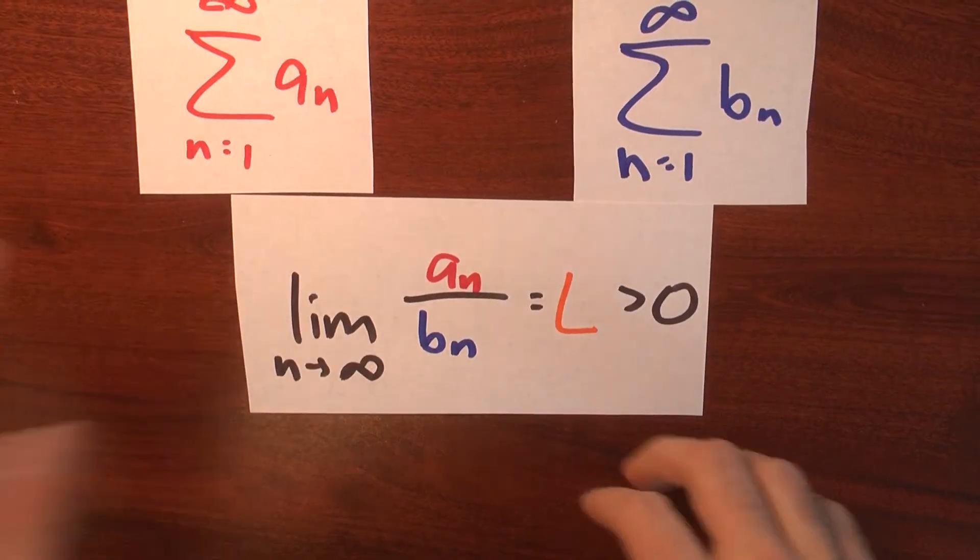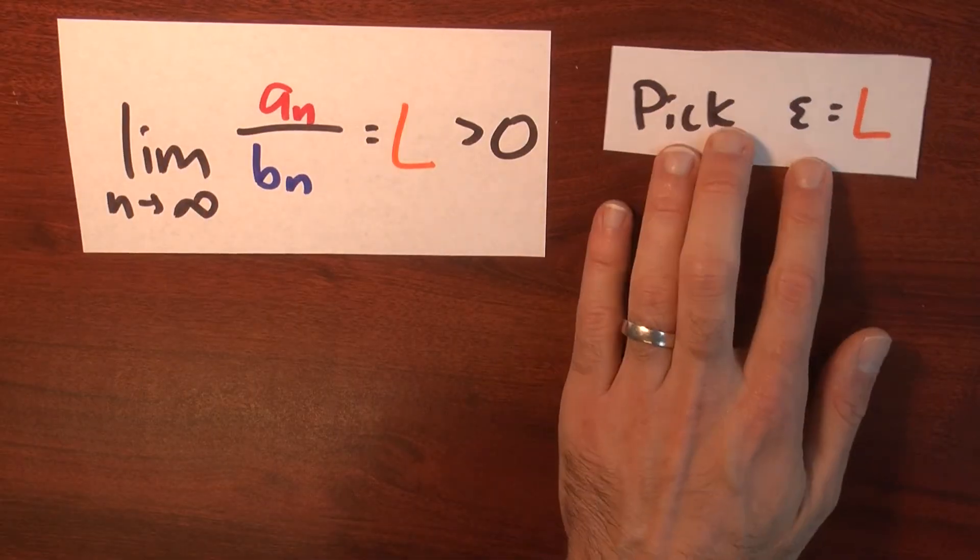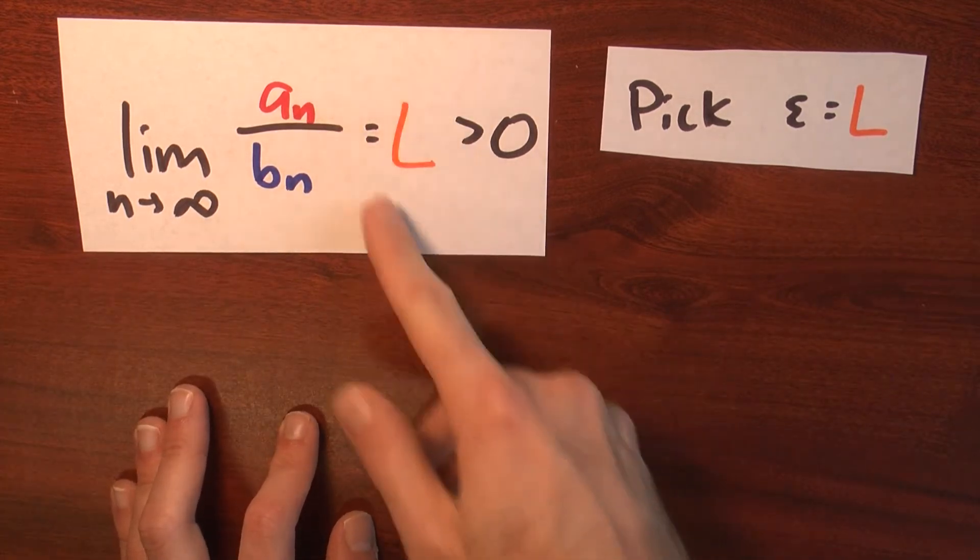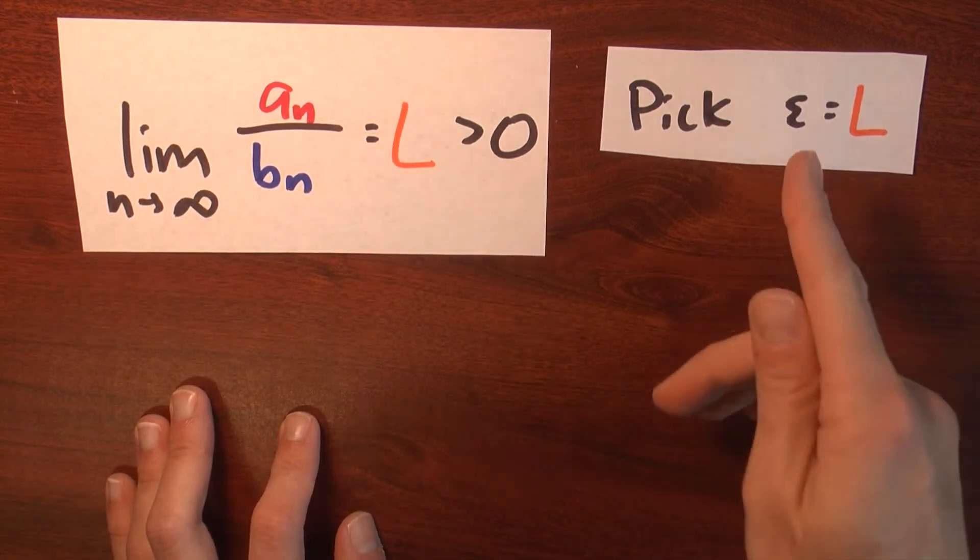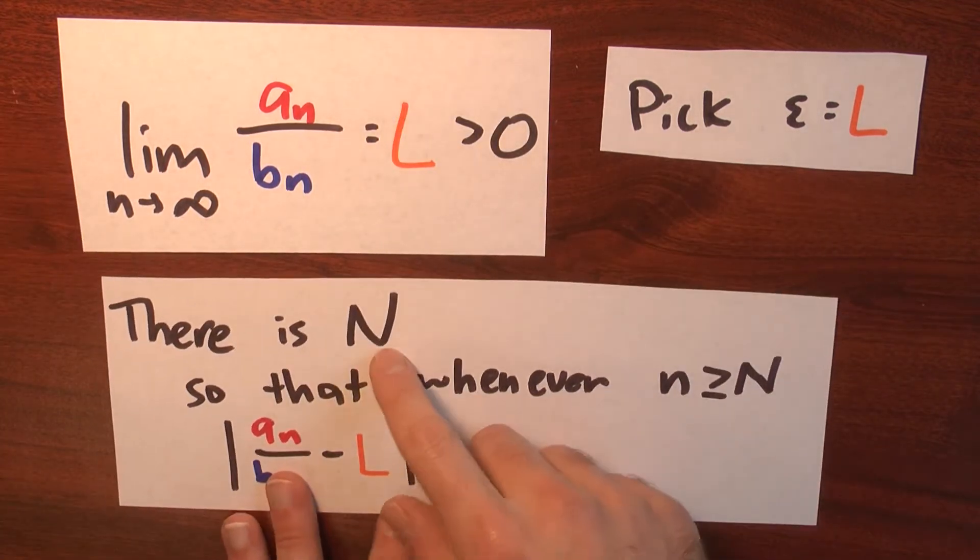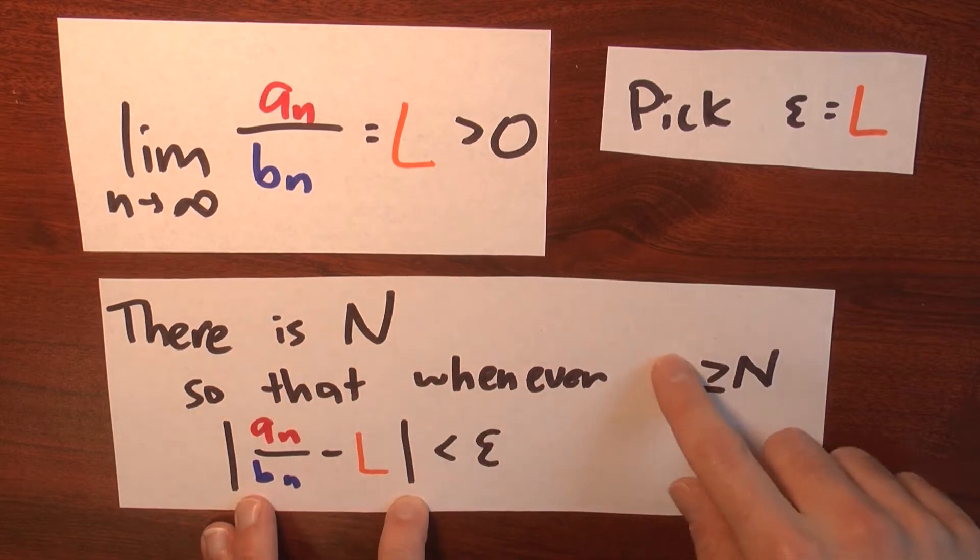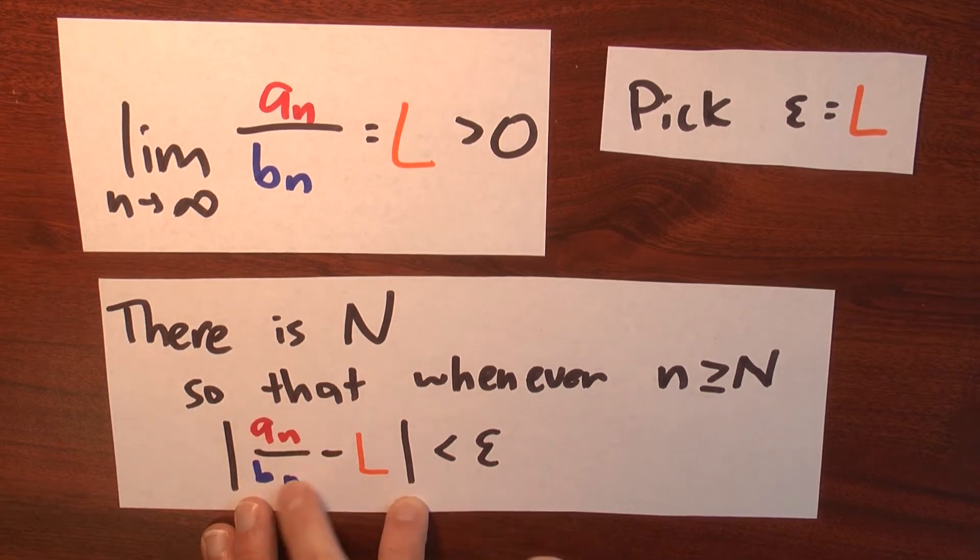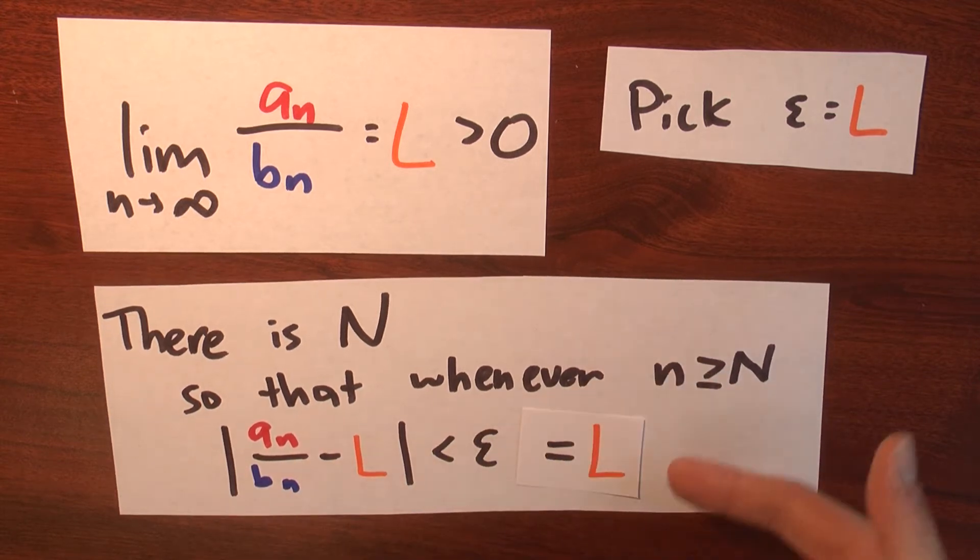I can be more precise with epsilons. So let's set epsilon equal to L in this case. Epsilon's going to be a positive number, but I'm assuming that my limit L is positive. So let's set epsilon equal to L. Then the definition of limit says that there's some big N so that whenever little n is greater than or equal to big N, the distance between the thing I'm taking the limit of, a sub n over b sub n, and my limit L is less than epsilon. And in this case, epsilon is L.